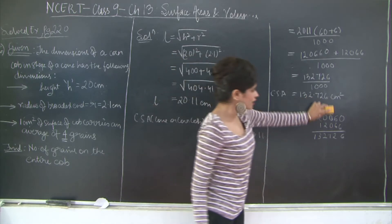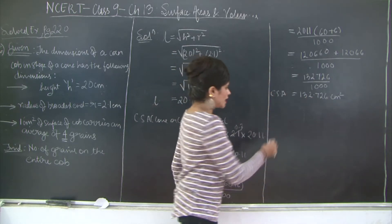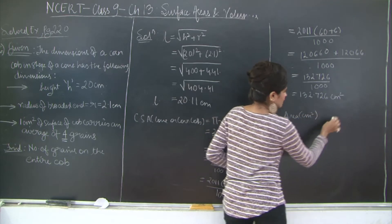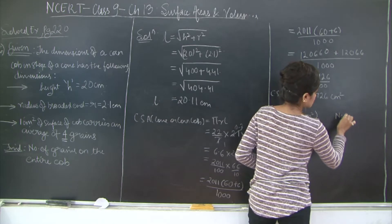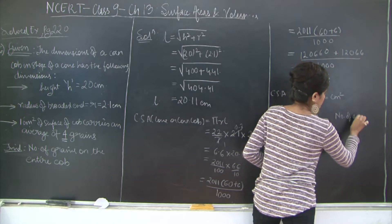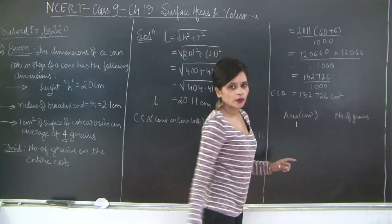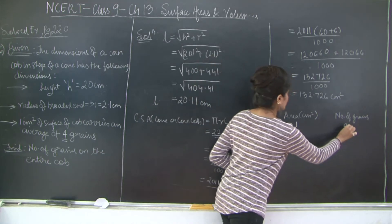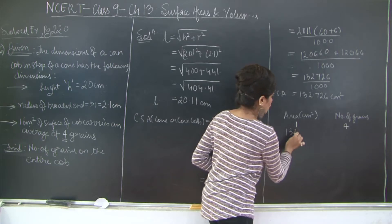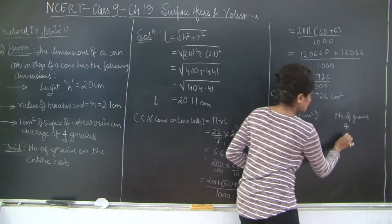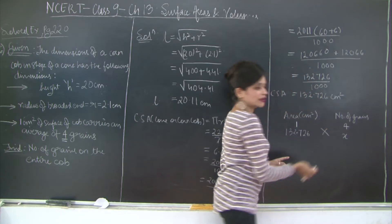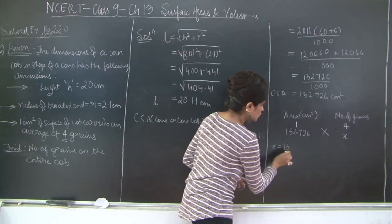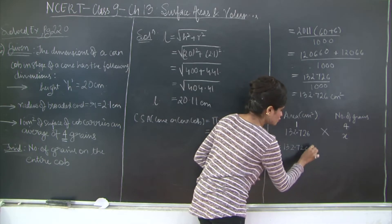Now we have the curved surface area of the cone. We can find the number of grains on it using unitary method. So I will say area in cm² and number of grains. In 1 cm² we have been given that there are 4 grains. So in 132.726 cm² let's say there are x grains. We can simply cross multiply and find the value.